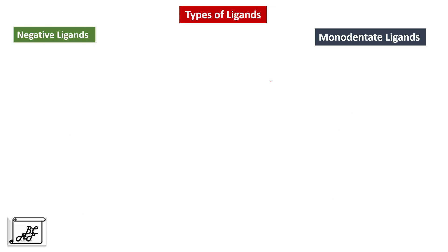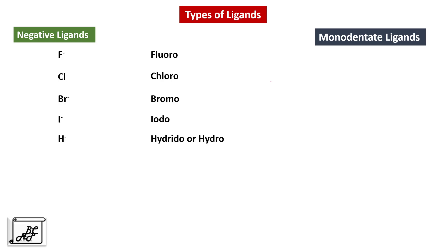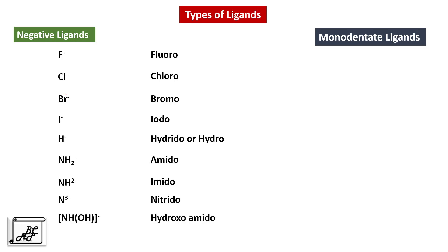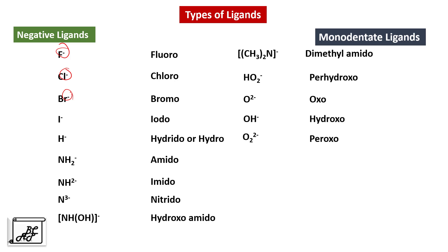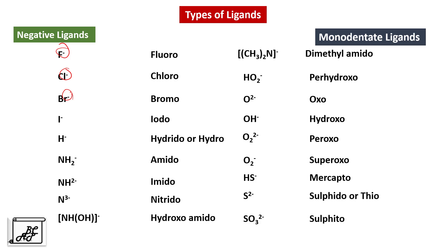Negative ligands carry a negative charge. Examples include fluoride (called fluoro in IUPAC), chloro, bromo, iodo, hydrido, amido, imido, nitrido, hydroxo, and dimethyl amido. More examples: perhydroxo, oxo, hydroxo, peroxo, superoxo, mercapto, sulfido or thio, sulfito, and sulfato. Knowing IUPAC names of specific ligands is very important for studying IUPAC nomenclature of coordination compounds.